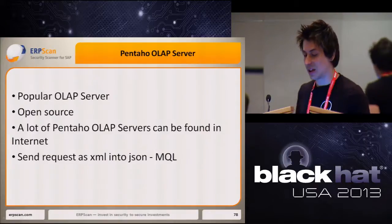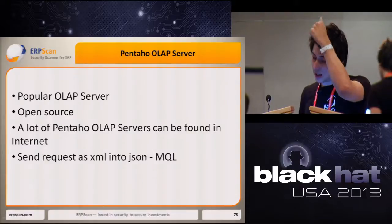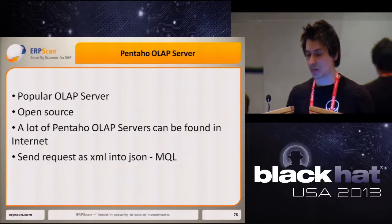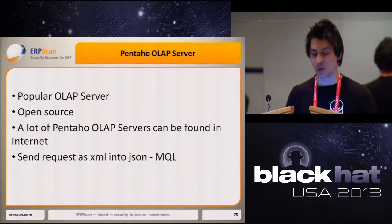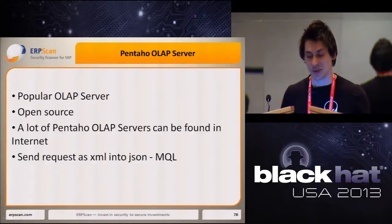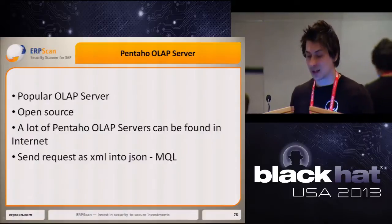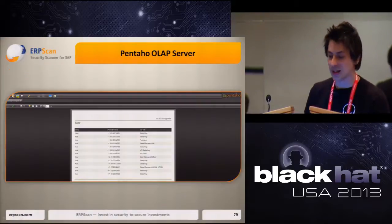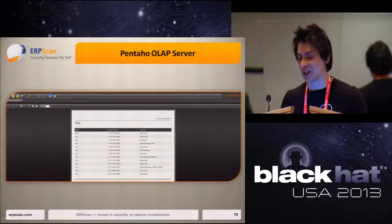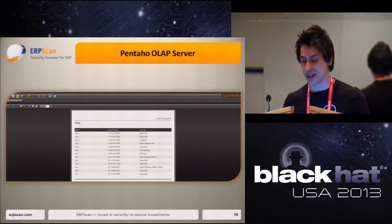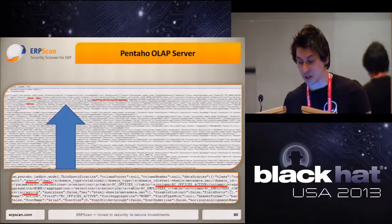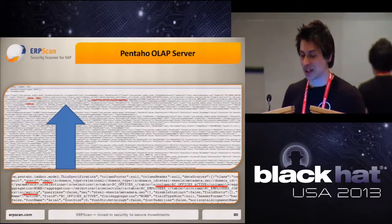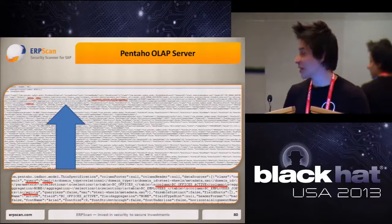Another example of an attack on an OLAP server through XML and MDX is on the popular OLAP server called Pentaho — also an open source solution. We found many Pentaho OLAP services on the internet. Pentaho transfers the request to the cube from XML to JSON and calls this technique MQL. The HTML5 interface allows users to easily create requests. The request to the OLAP server in the sniffer shows that a query parameter specifies the MQL request, which contains XML — and again we found XXE there.